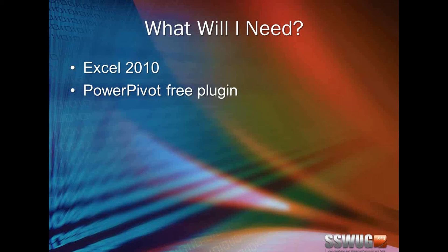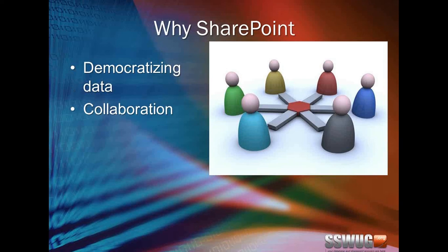Basically, PowerPivot is a small version of Analysis Services living inside of Excel. There's no actual Analysis Services service, but it's essentially the code that makes Analysis Services churn — something called VertiPaq — embedded into Excel, so it hyper-compresses the data and allows you to slice and dice. It takes all the R&D of the past 10 years that went into Analysis Services and gives users the ability to do that without a cube.